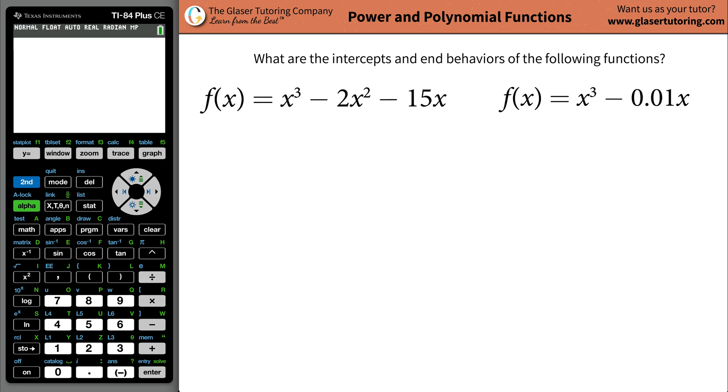I'll leave you links there for videos that we've done on that topic. Without further ado, let's get down to it. So what are the intercepts and end behaviors of the following functions? The first one we have over here is going to be f(x) equals x cubed minus 2x squared minus 15x.